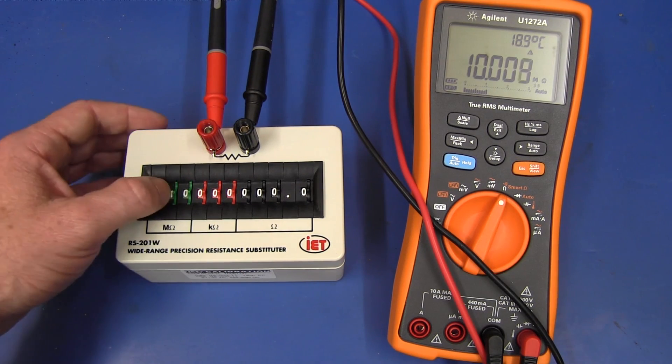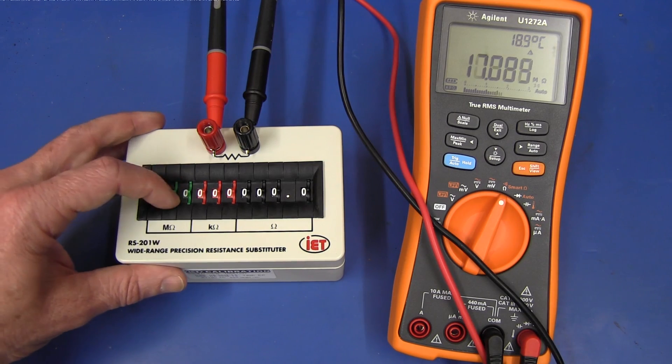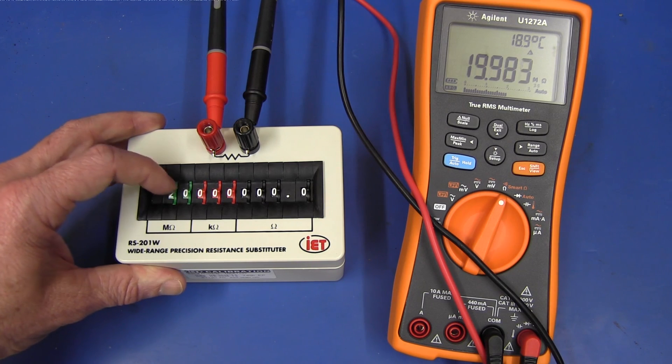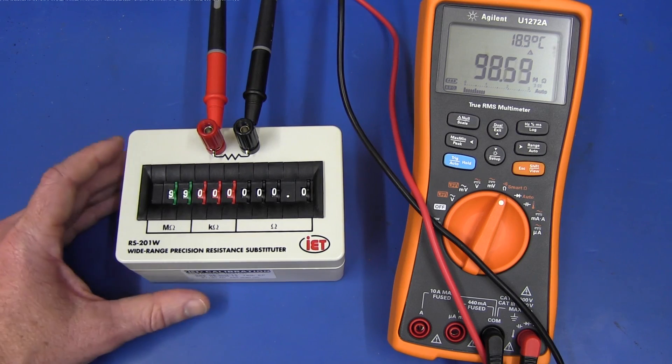And let's check out the 10 meg value here. There we go, pretty spot on according to the Agilent. And I can't remember the Agilent's spec on this range right off the top of my head. But there you go. It can measure up to 99.9, no problems at all.